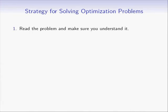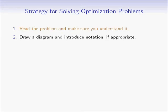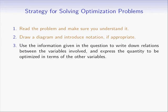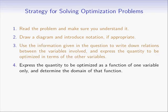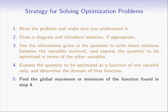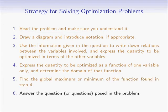Here are the steps. Step 1: Read the problem and make sure you understand it. Step 2: Draw a diagram and introduce notation, if appropriate. Step 3: Use the information given to write down relations between the variables and express the quantity to be optimized in terms of the other variables. Step 4: Express the quantity to be optimized as a function of one variable only and determine the domain. Step 5: Find the global maximum or minimum of that function. Step 6: Answer the question posed in the problem.